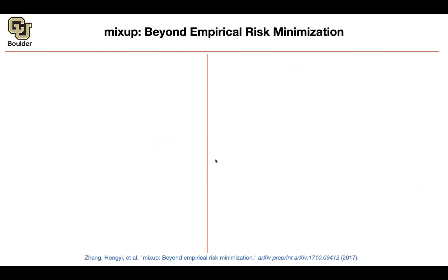We can move on to mix-up. It's a really successful technique for data augmentation, and the cool thing about it is that it is data agnostic. We know that data augmentation is really helpful for regularizing large neural networks, and the regularization is happening at the input layer, even before any layers are constructed from your neural network.